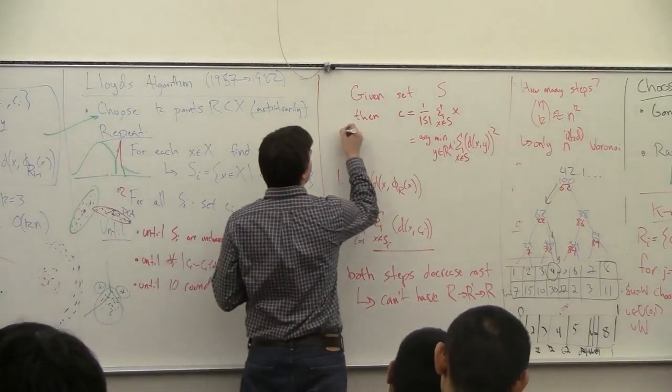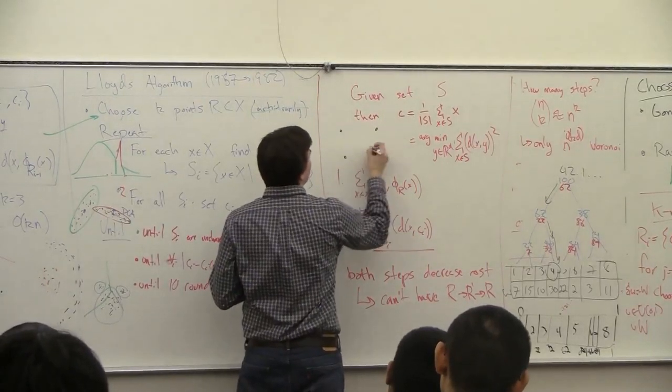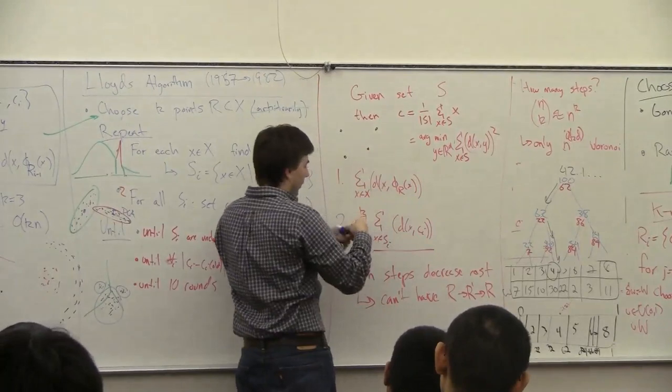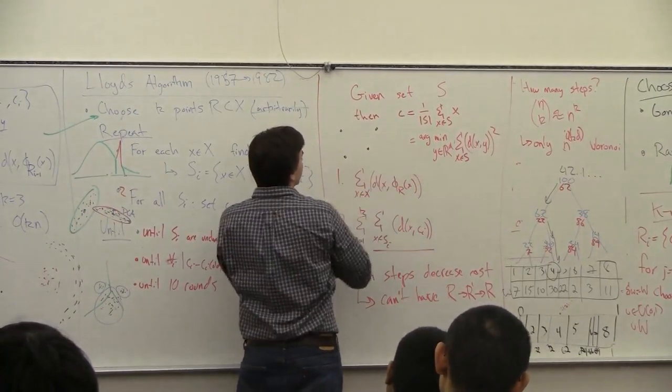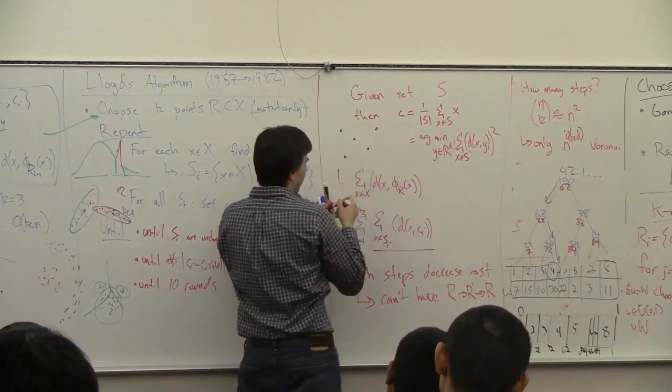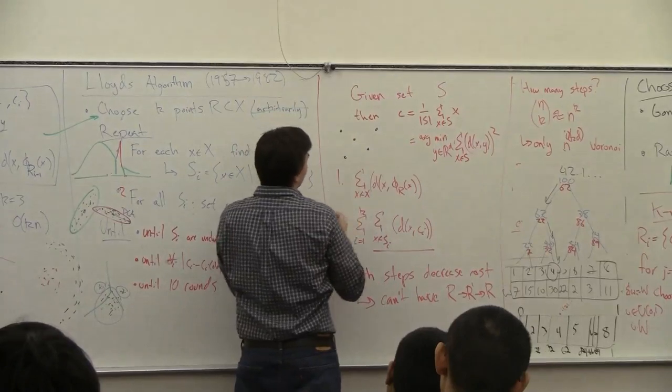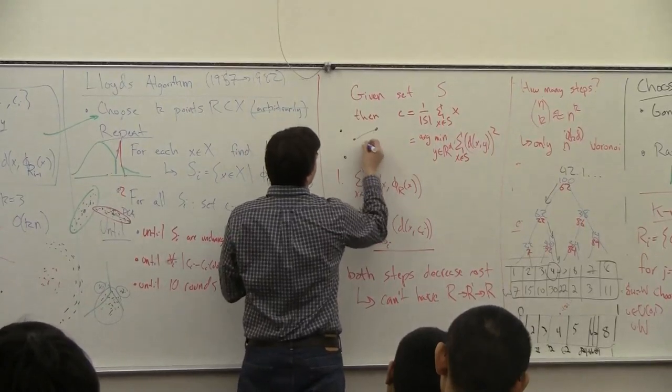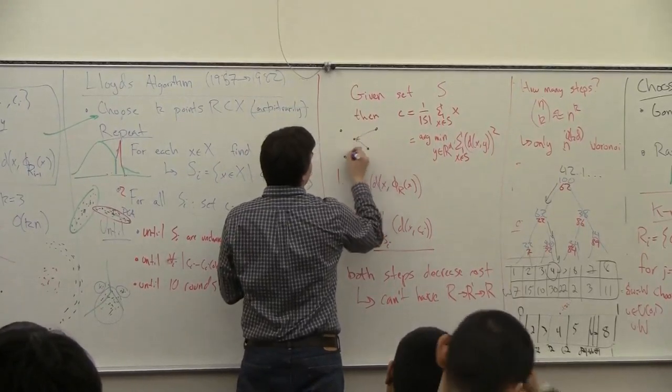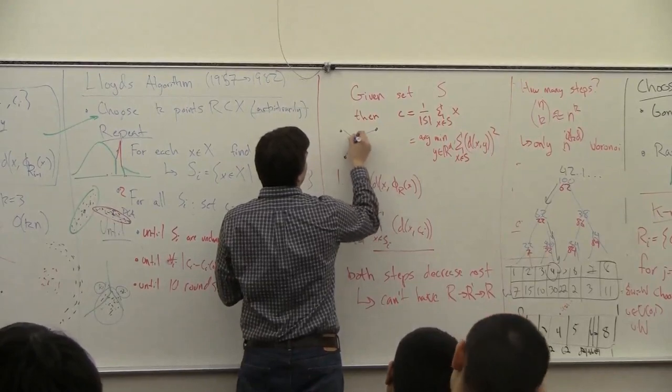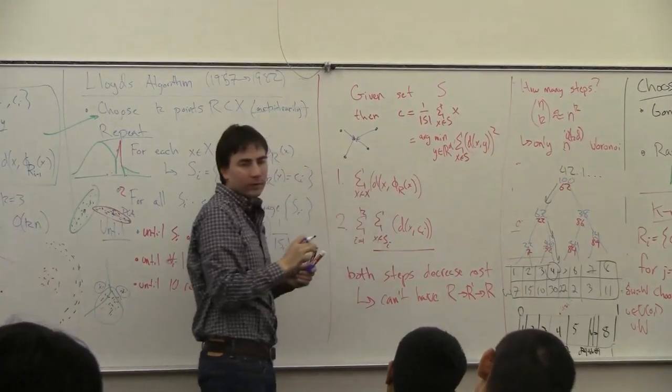If you've got a set of points and I look at the average, then if I take all of these vectors from the points to the average and add them up, it's going to be zero. That's the average.